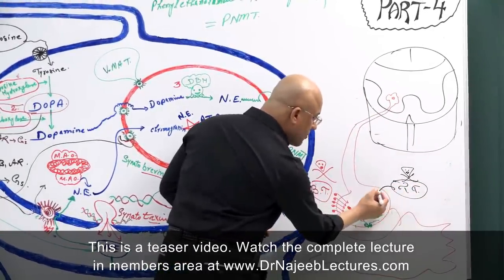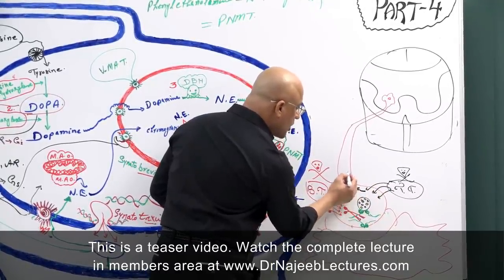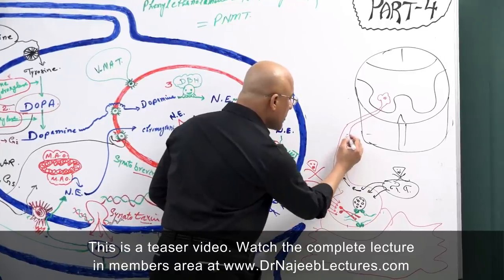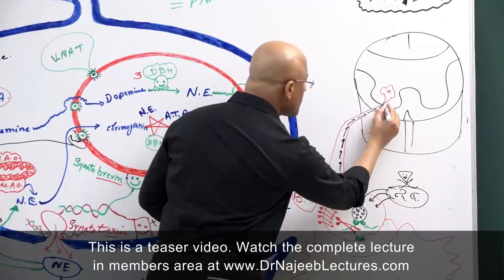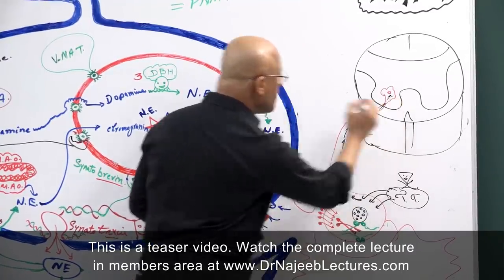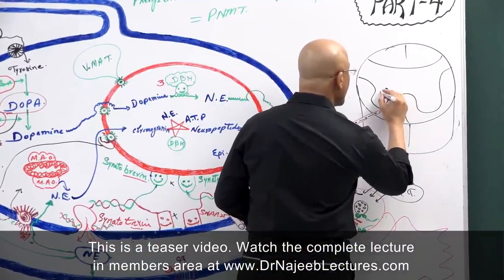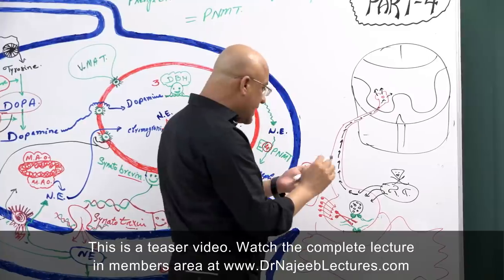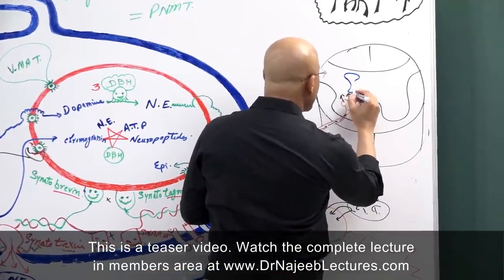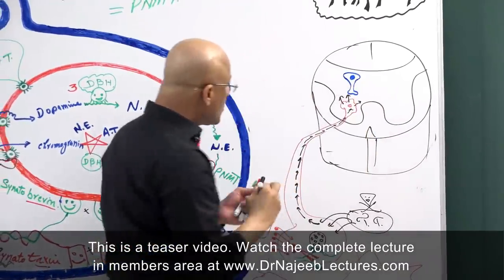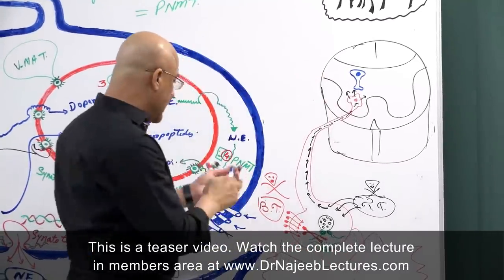Tetanus toxin is also initially taken up by these nerve endings, but a part of it travels retrograde — moving upward through the axoplasm to reach the spinal cord. From there it is released out into the spinal cord tissue where it encounters special inhibitory interneurons.